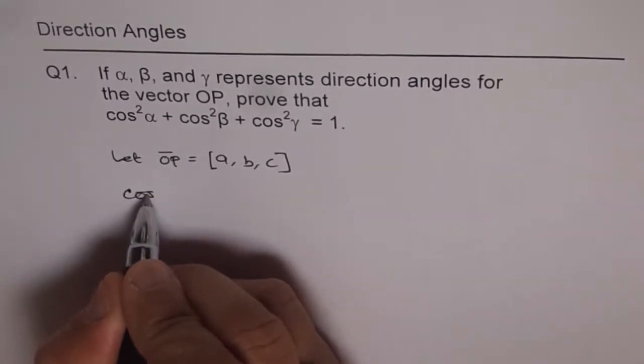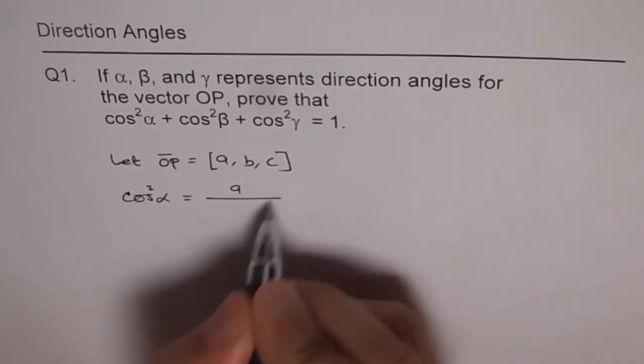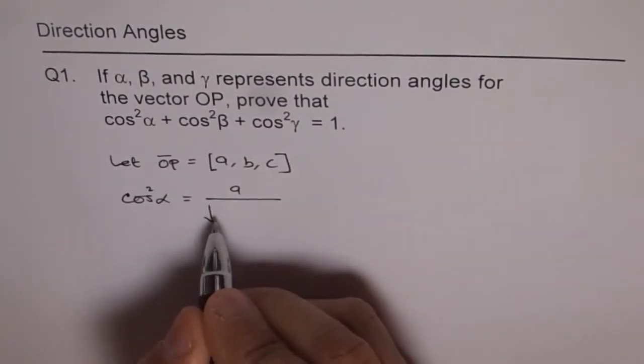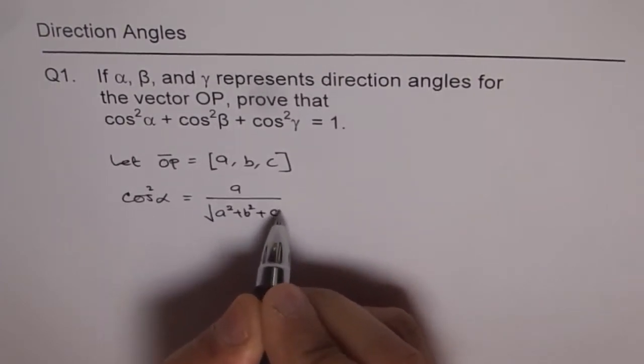So cos square alpha in that case equals A over magnitude of OP, which is A square plus B square plus C square.